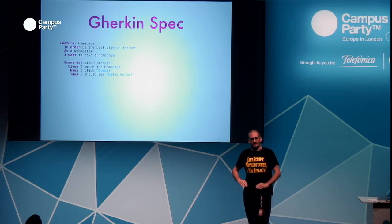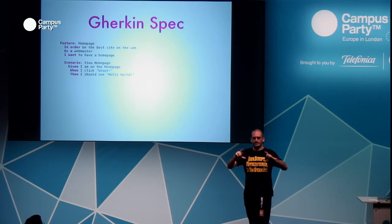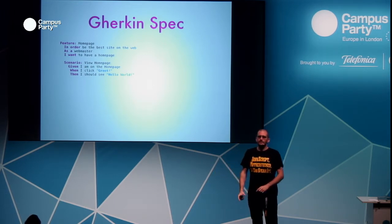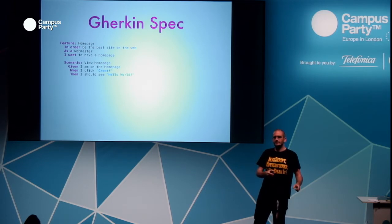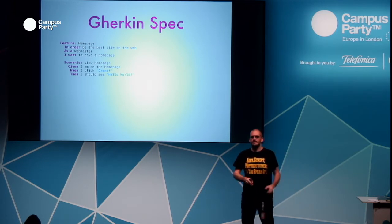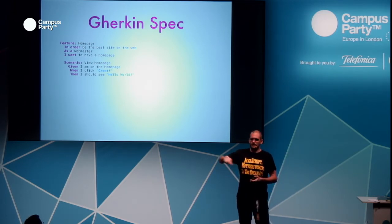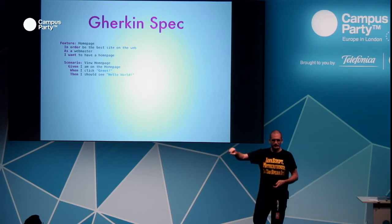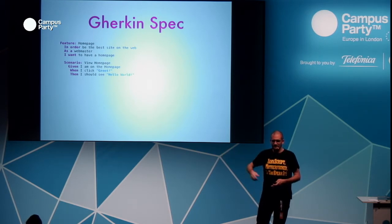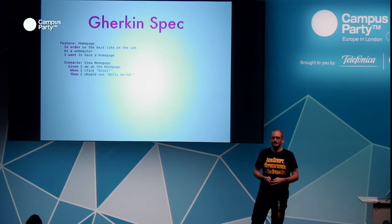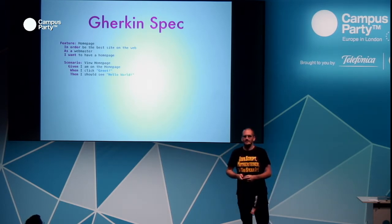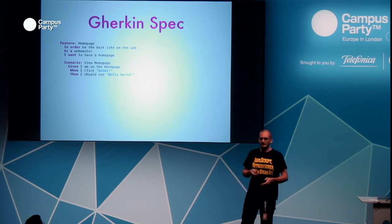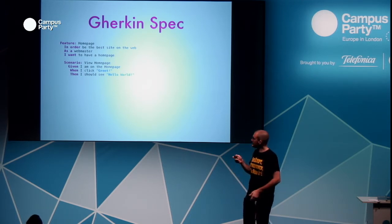You specify the requirements, go to them, get sign-off. Once they've signed off you start working, you deliver it. And then when they come back with 'but actually...' you can say: no, you signed off on this — this is what you've got. Anything else is new work. The way this works is you define a feature. In this case, a very contrived example: the feature is 'I want a home page,' you define the business value — in order to be the best site on the web — and as a webmaster, here's what I want.